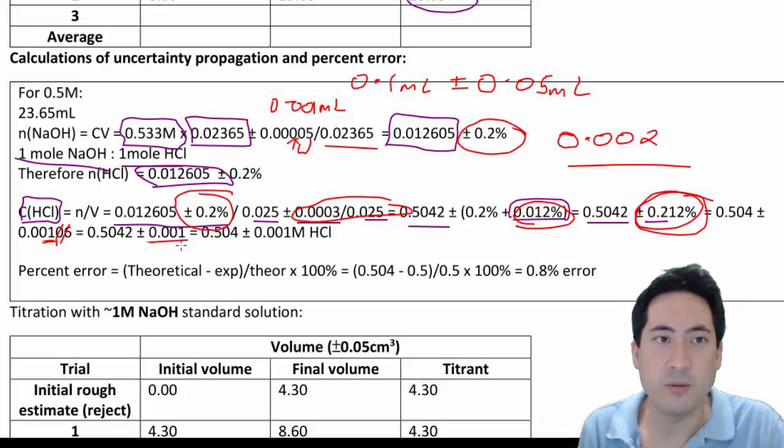So once I've got that 0.001, I then also need to convert my final figure to the same number of unit placings as that. So I can only go to three decimal places back there. So I need to take my 1, 2, 3, and my 0, 5, 0, 4, and get rid of that 2. And so my final answer is 0.504 plus or minus 0.001 molar HCl.